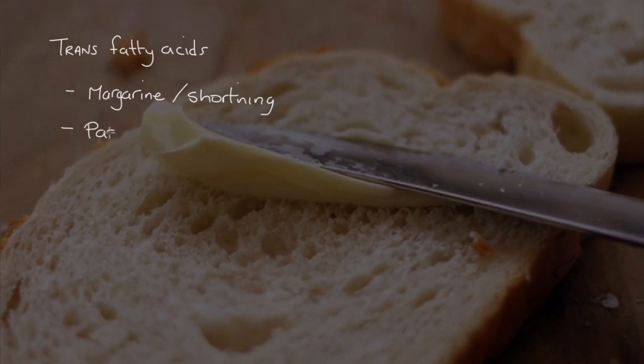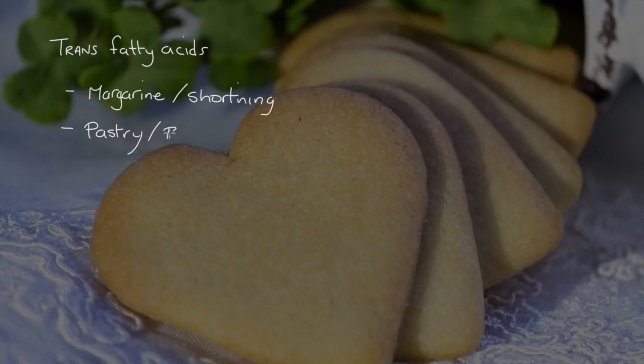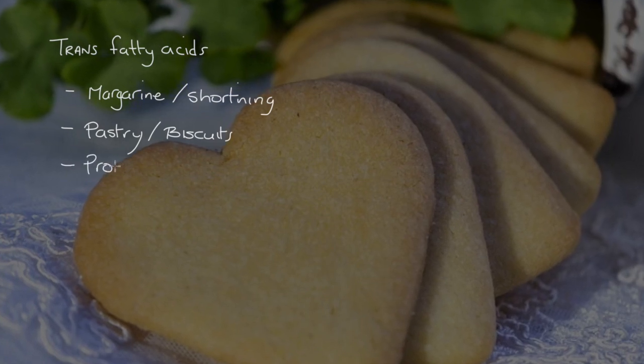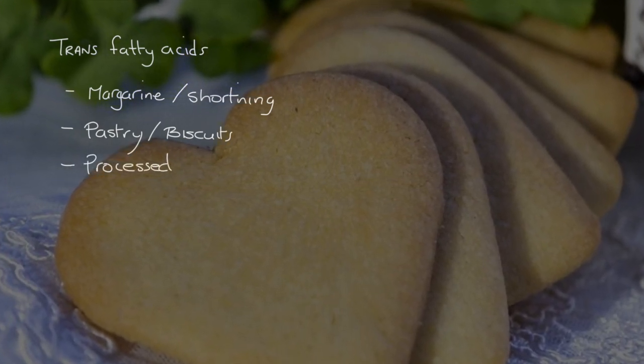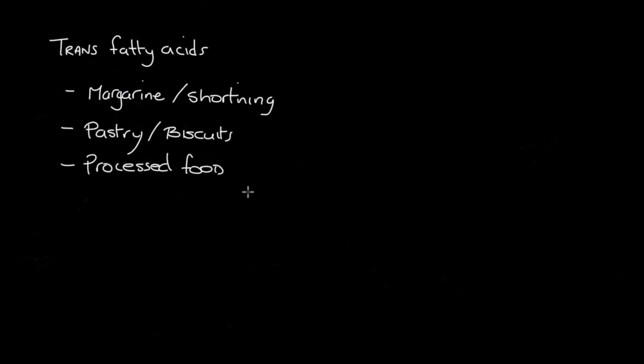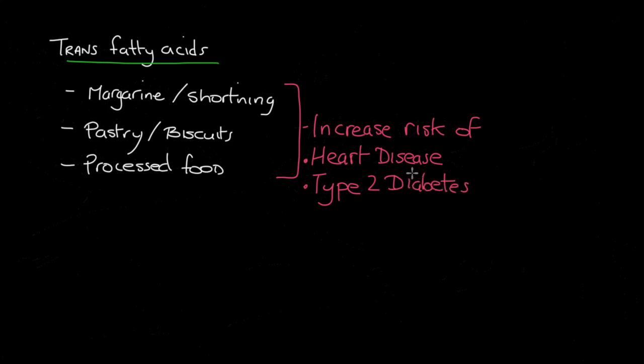Now, the importance of trans versus cis isomers comes to light when dealing with fatty acids, and more specifically trans fatty acids. These fatty acids are typically produced during the production of margarine and shortening. Shortening is used in the production of pastry and baking cakes and biscuits. Trans fatty acids are associated with an increase in heart disease and type 2 diabetes. Based on this, the World Health Organization have recommended a movement towards eliminating the consumption of industrial trans fats from the diet.